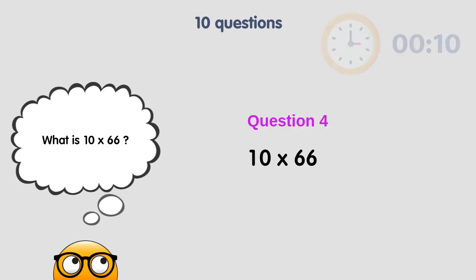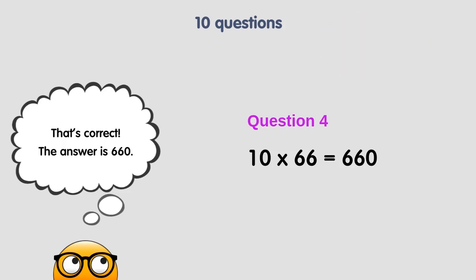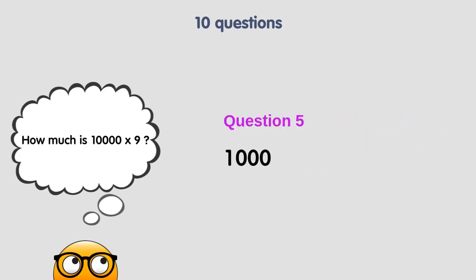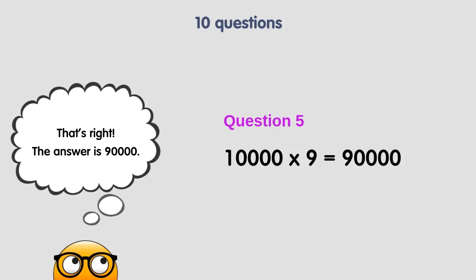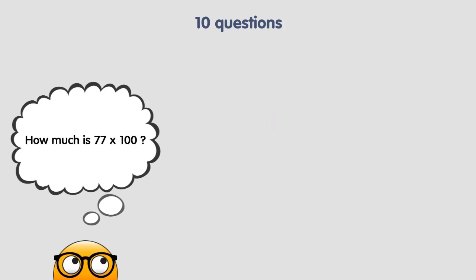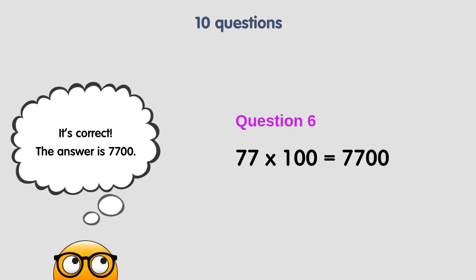What is 10 times 66? That's correct. The answer is 660. How much is 10,000 times 9? That's right. The answer is 90,000. How much is 77 times 100? It's correct. The answer is 7,700.